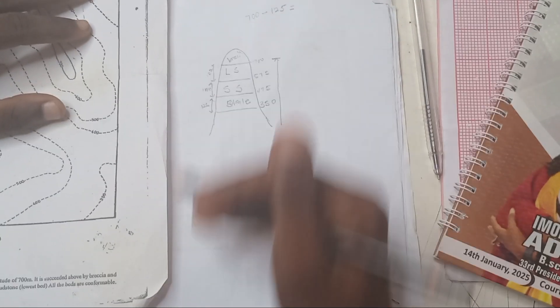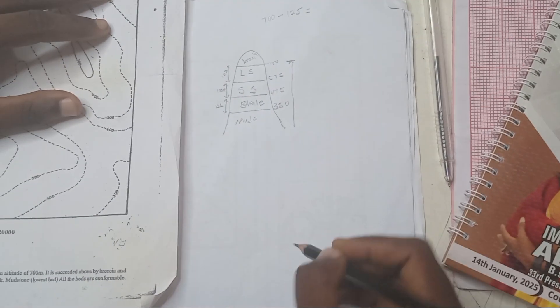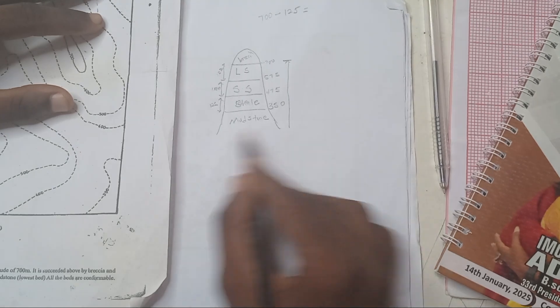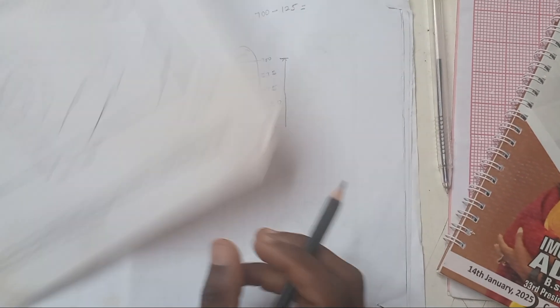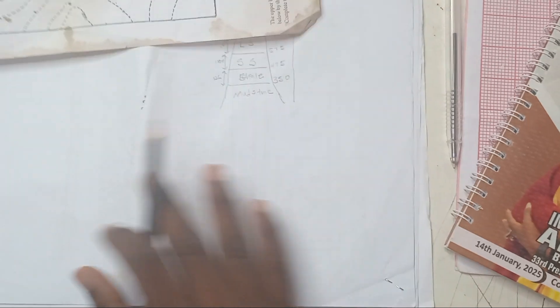And I say the lowest bed is mudstone. They didn't measure the thickness of it. So we also know that at 350 and below, the lowest rock that we can find here is mudstone. So here we have the elevation we are working with to draw our boundary on our topological map to convert it towards a geological map.